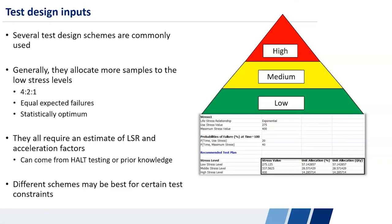And so they require an estimate of your life stress relationship and the acceleration factors at the low and high bounds of your stress level. And different schemes may make sense based on your test constraints. If you only have two test fixtures, then you're going to pick a two stress level test design scheme, for example.